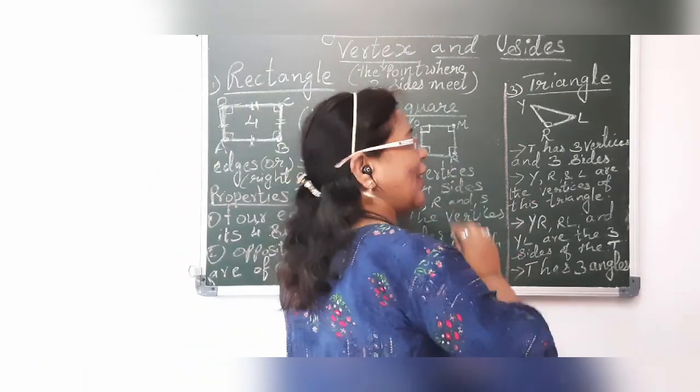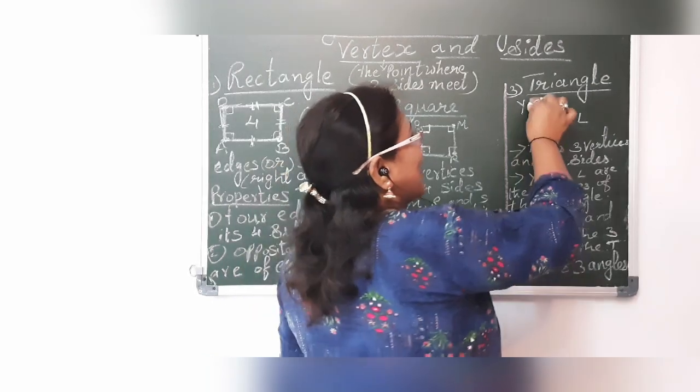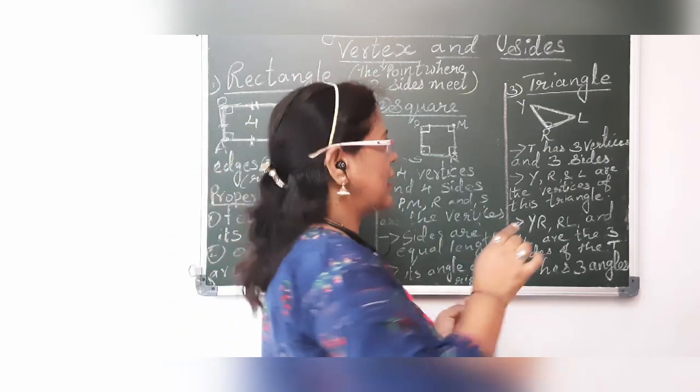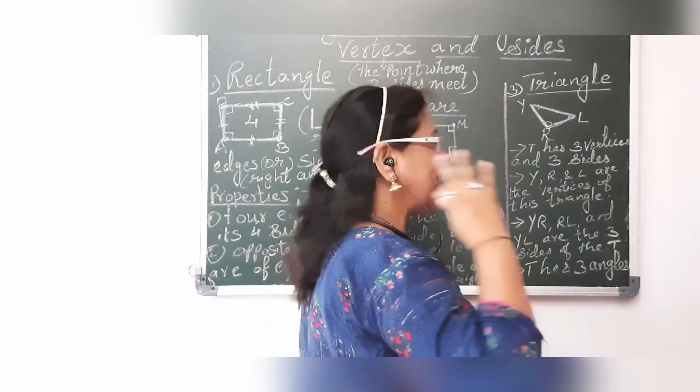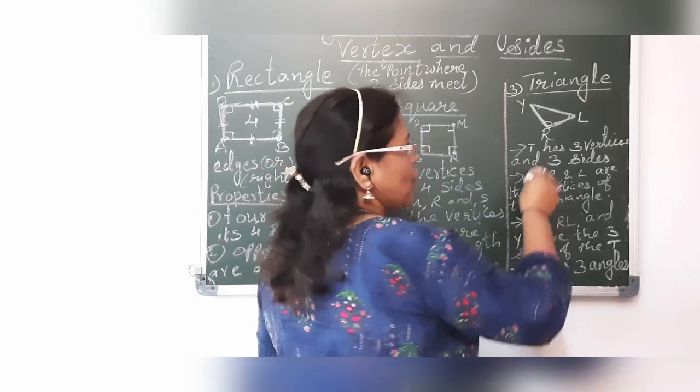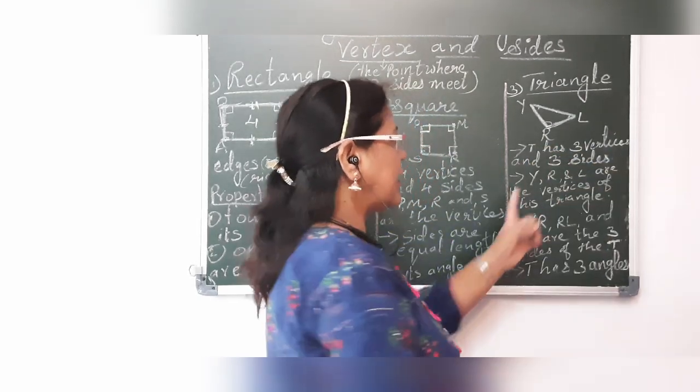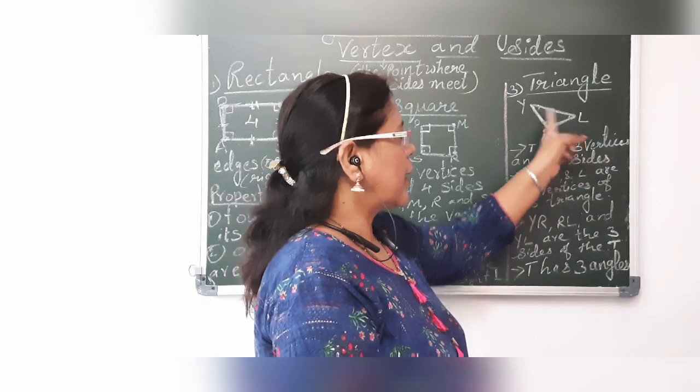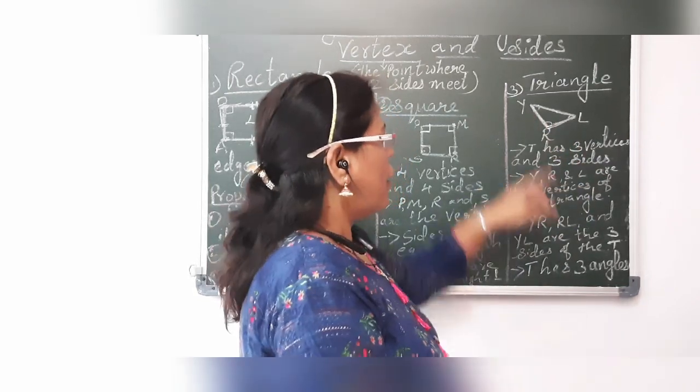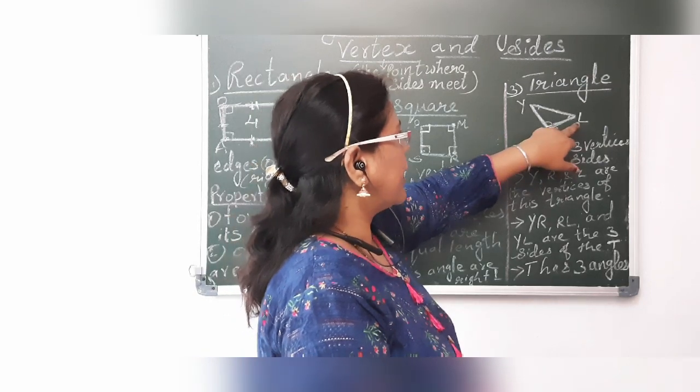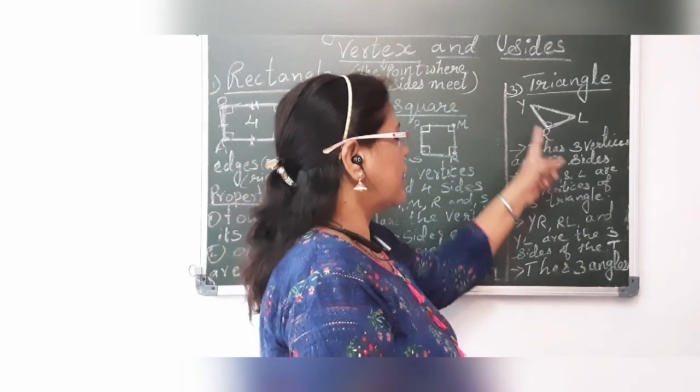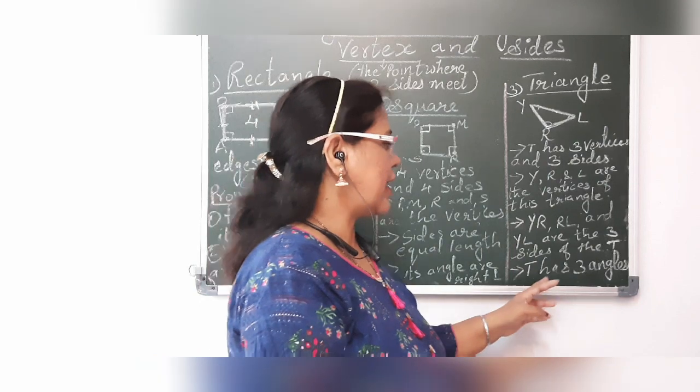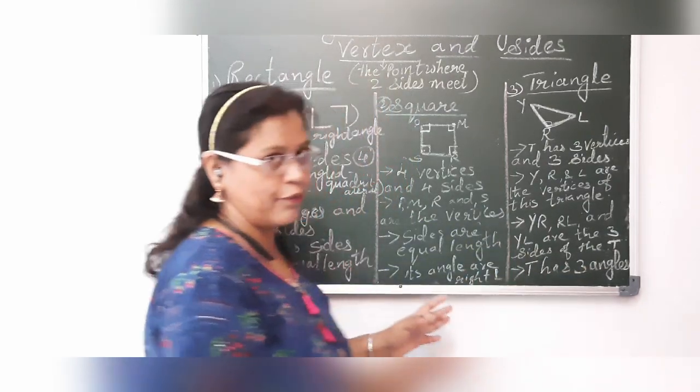Now, third figure which you are going to learn is a triangle. Triangle. Not mad angle. It's a triangle. So triangle has how many sides? Very, very quickly. I want to answer in the inbox. It has how many? Three sides. So triangle has three vertices and three sides. You can see Y, R, L. Y, R, L are the three vertices of this triangle. Y, R, and R, L and L, R are the three sides of the triangle. Triangle has how many sides? How many angles? It makes three sides and it has three angles in it.